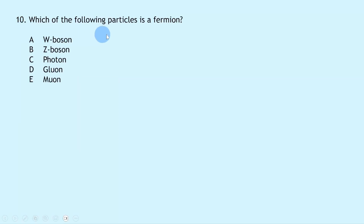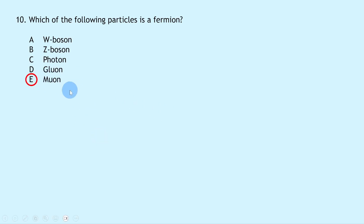Question 10 asks which particle is a fermion. A fermion is another name for a matter particle, which includes leptons and quarks. Leptons include electrons, muons and tauons. The only option that fits is E, the muon. The others — W and Z bosons, photons and gluons — are force-carrying particles, which are bosons, not fermions.